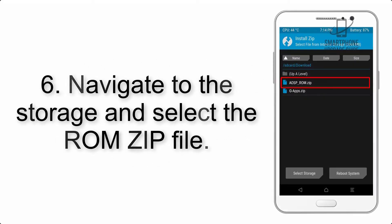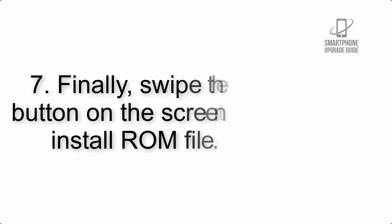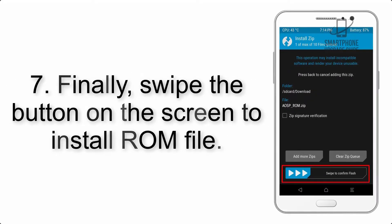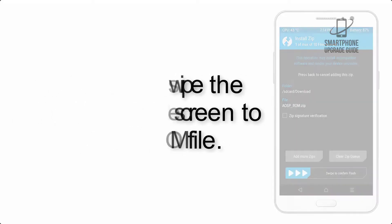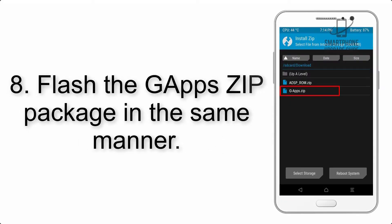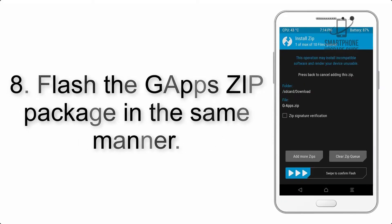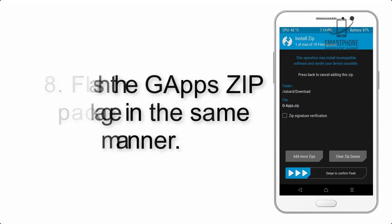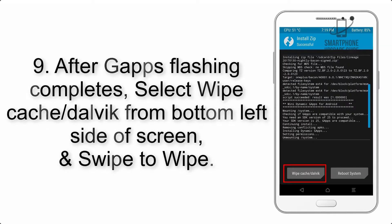Step 6: Navigate to the storage and select the ROM zip file. Step 7: Finally, swipe the button on the screen to install the ROM file. Step 8: Flash the gapps zip package in the same manner.